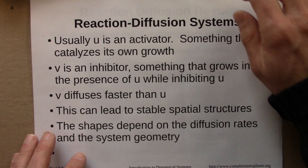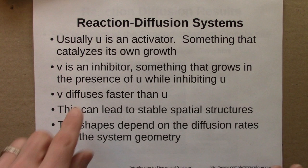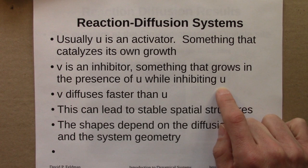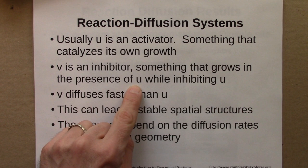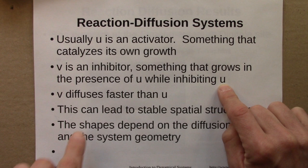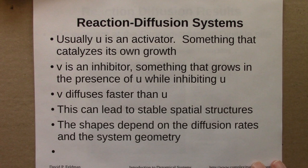In reaction diffusion systems, specifically activator-inhibitor systems, U is usually an activator — something that catalyzes its own growth, so the presence of U gives rise to more U. Exponentially growing rabbits are an example. V is some sort of inhibitor that would also grow in the presence of U, but would also inhibit U, preventing it from growing too much. In my example, V was foxes: foxes grow in the presence of rabbits, but foxes also inhibit the rabbits. If V diffuses faster than U, this can lead to stable spatial structures.